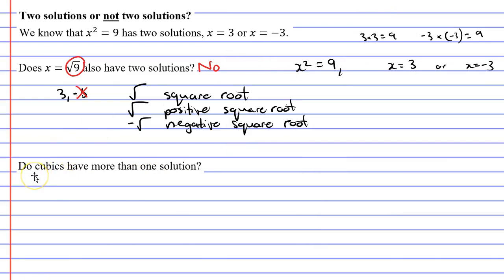Anyway, I also have another question here, and I just said, do cubics have more than one solution? For example, what about the cubed root of 8? We know that this is 2, because 2 times 2 times 2 equals 8. Can it also equal negative 2? What do you get when you multiply negative 2 three times? Negative 2 times negative 2 times negative 2.